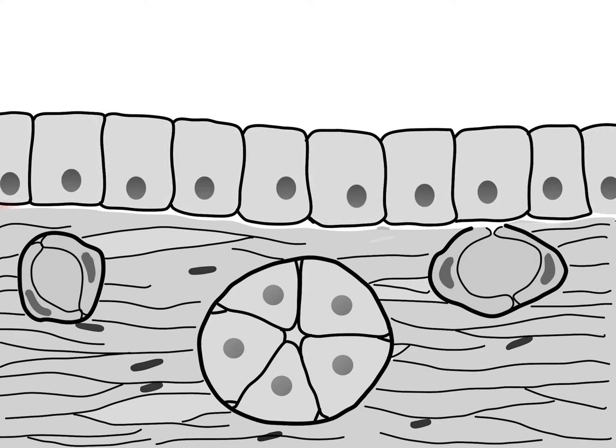They have a special sheet of extracellular matrix called the basement membrane which always lies at the interface of epithelial and connective tissue.